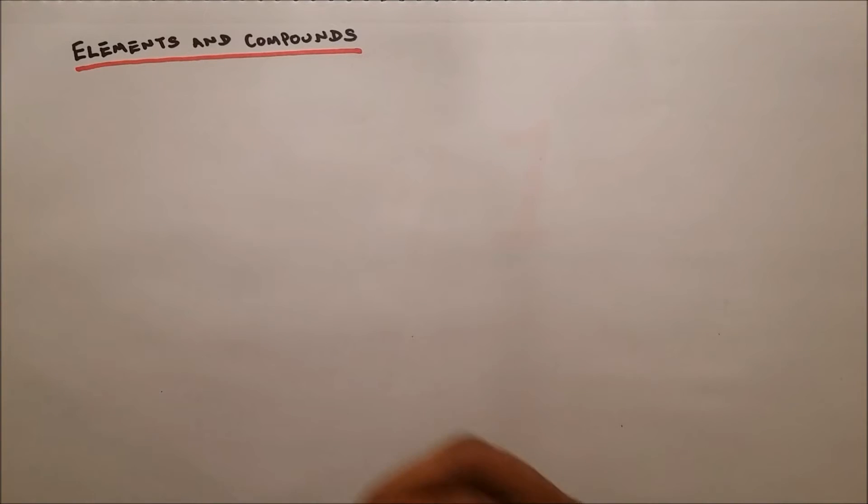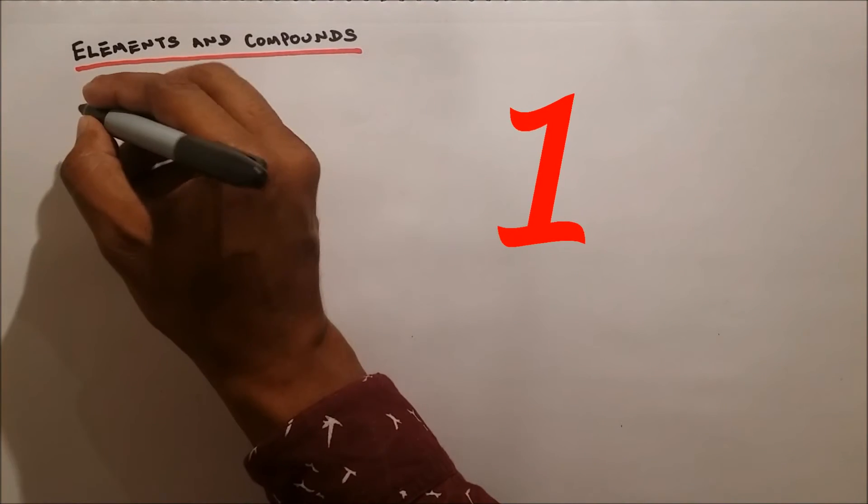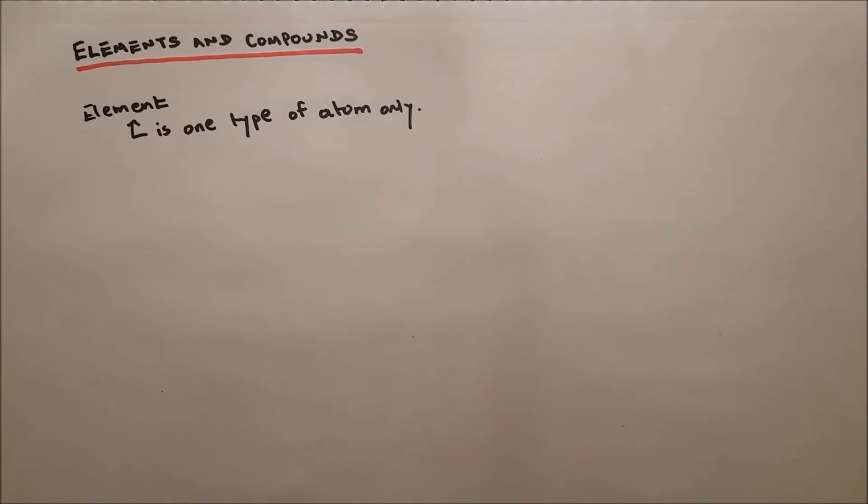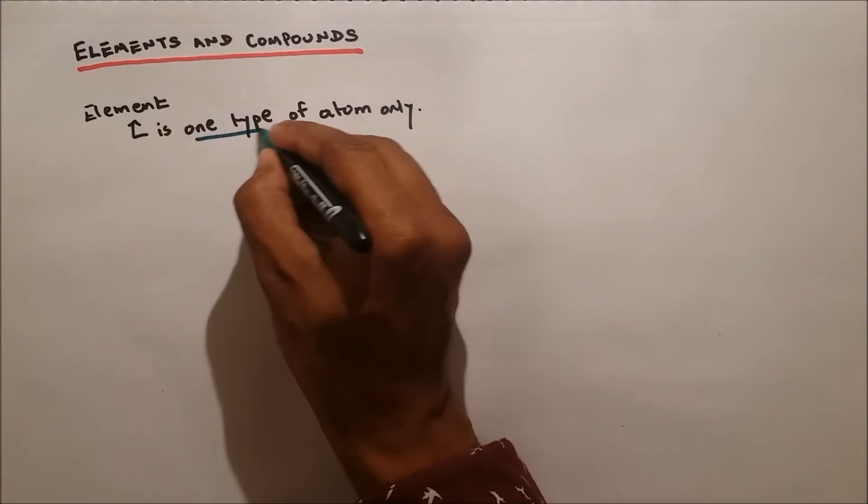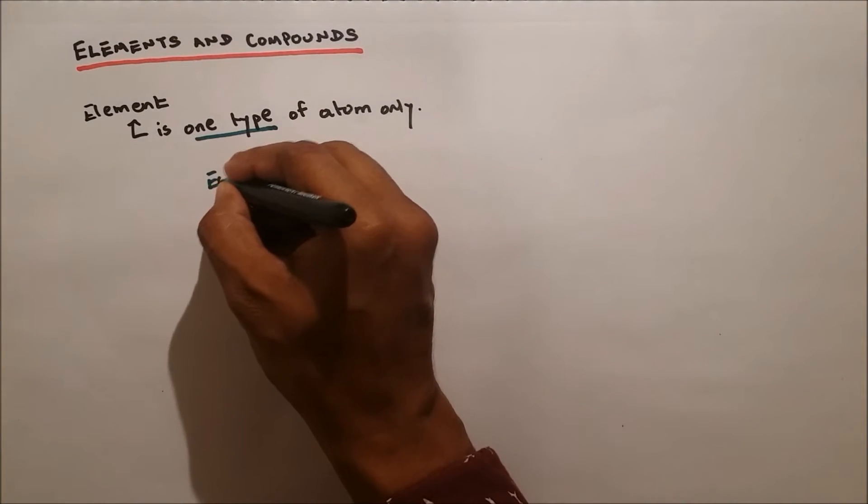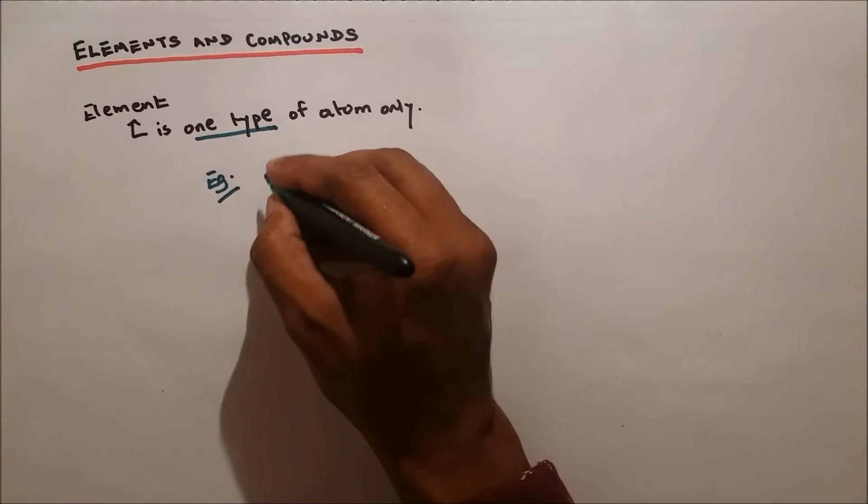Now what's an element? An element is one type of atom only. The word 'one type' is very important. So for example, if we take oxygen.